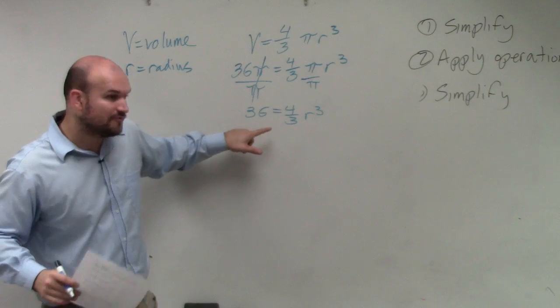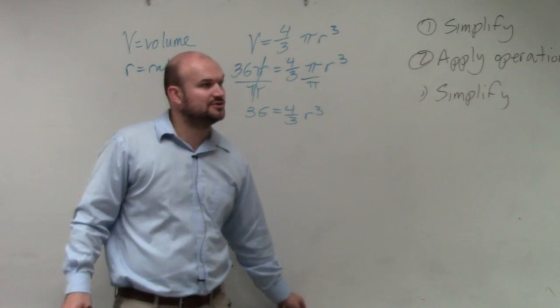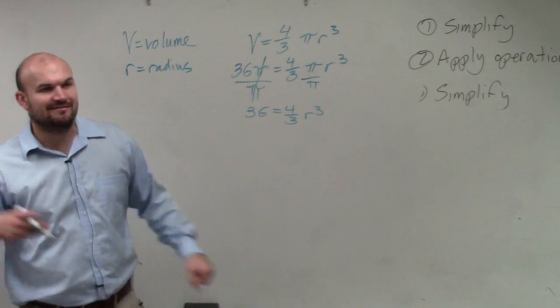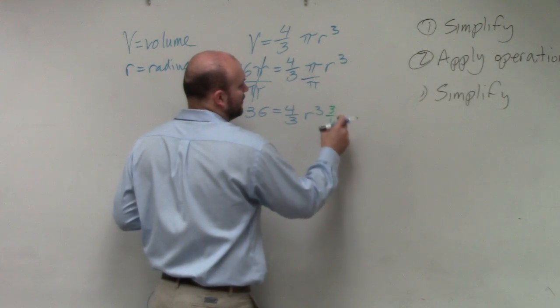So you have 36 equals 4 thirds r cubed. You could divide by 4 thirds. However, instead of dividing by fractions, I prefer to multiply by the reciprocal. So you can multiply by 3 over 4 on both sides.